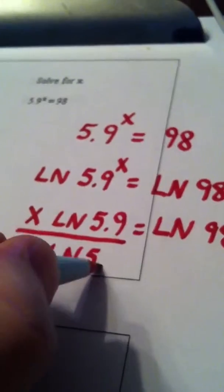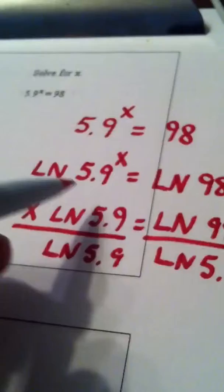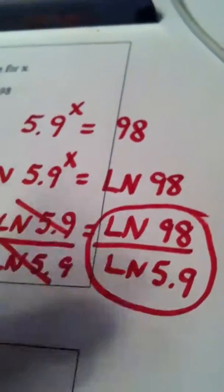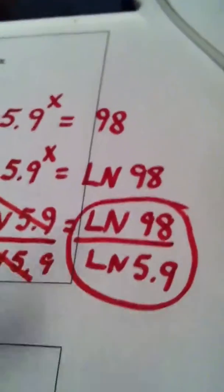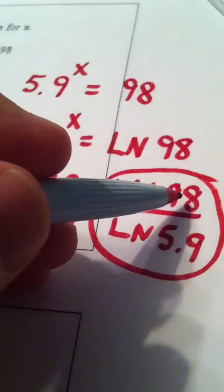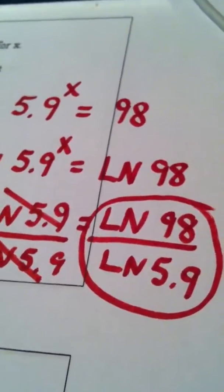And then we finish by dividing to get x alone. We divide by the natural log of 5.9. X is equal to this. And again, if you were asked to approximate your answer to the nearest thousandth or hundredth or whatever, you would simply pull out your calculator and type in natural log of 98 divided by the natural log of 5.9, hit enter, and then answer the question to the degree of accuracy the directions asked for.